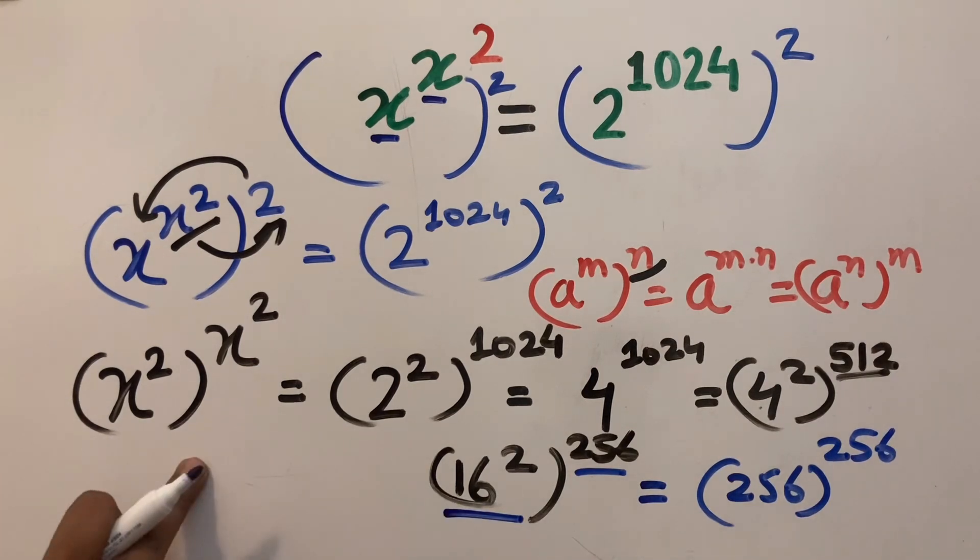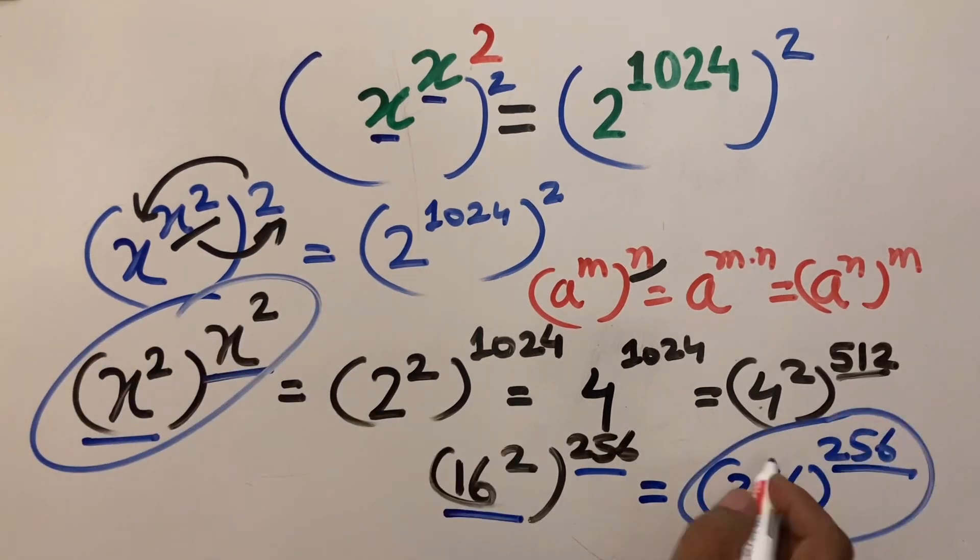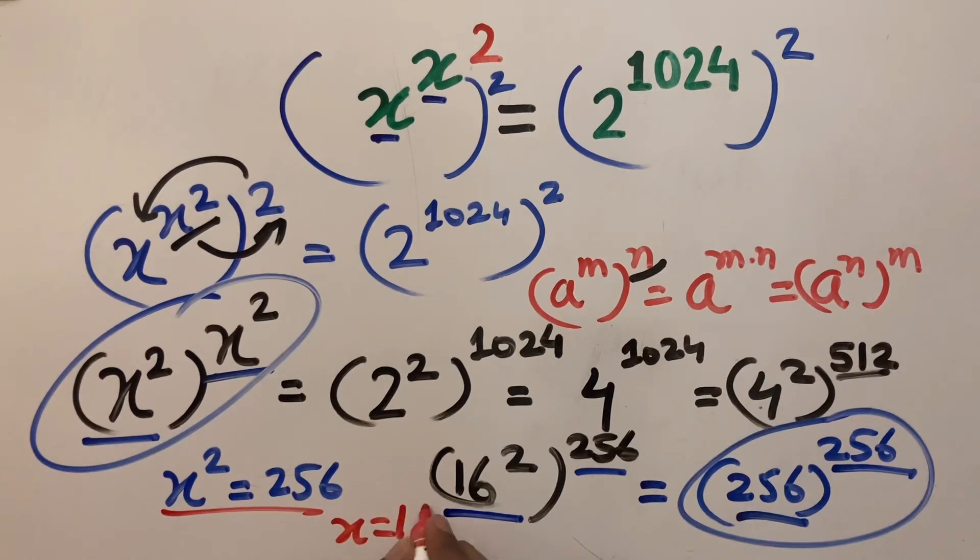Therefore, this equation simplifies to x squared to the power x squared equals 256 to the power 256. After comparing them, we can see that x squared equals 256, and x equals 16.